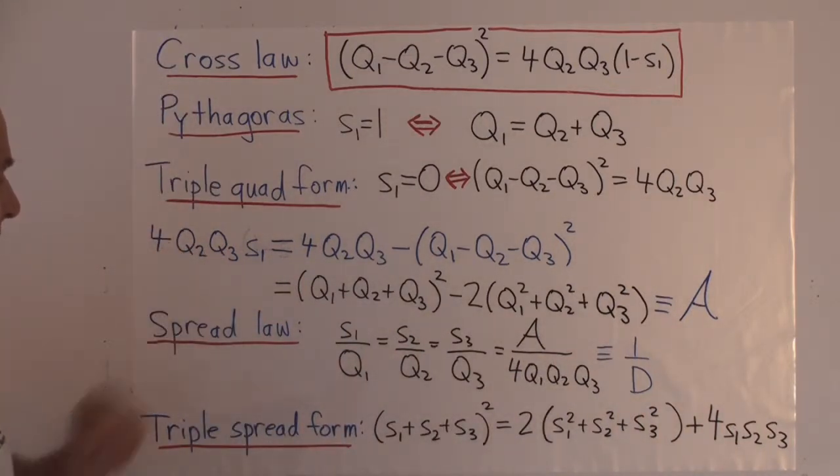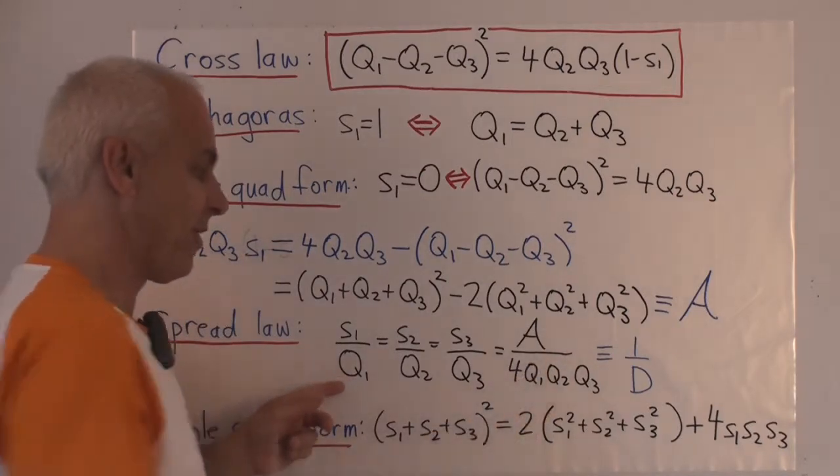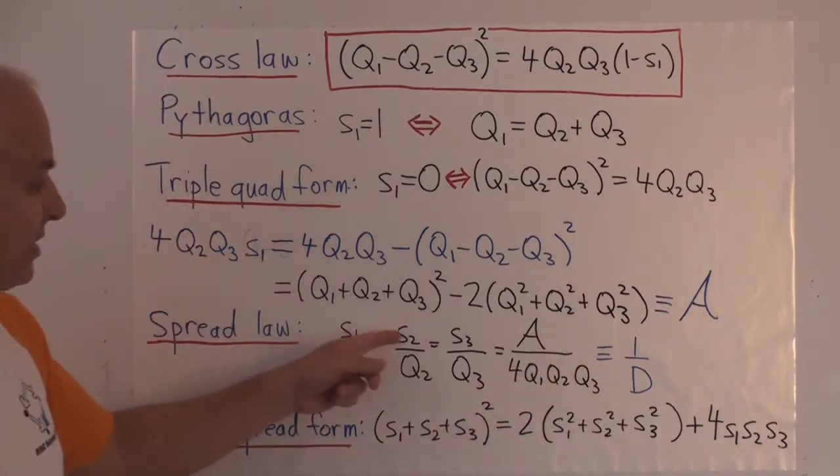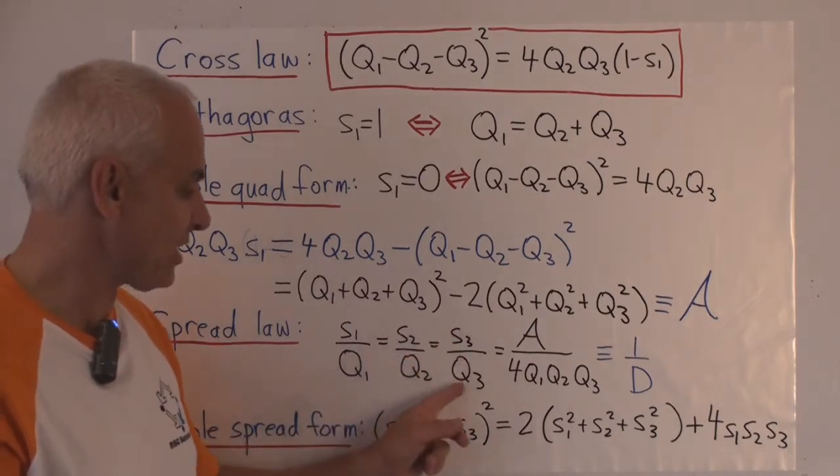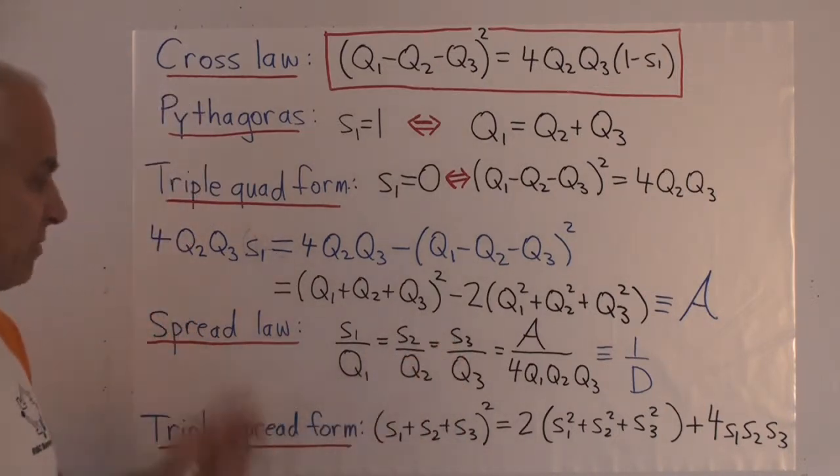Now if we take this expression here and divide everything by four Q1, Q2, Q3, then we get S1 over Q1 equals this. And then by symmetry, that's also the same as S2 over Q2, also the same as S3 over Q3. And that's the spread law.